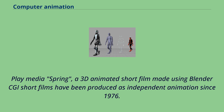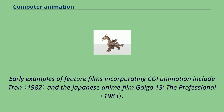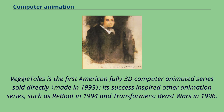A 3D animated short film made using Blender — CGI short films have been produced as independent animation since 1976. Early examples of feature films incorporating CGI animation include Tron and the Japanese anime film Golgo XIII: The Professional. Veggie Tales is the first American fully 3D computer animated series sold directly. Its success inspired other animation series, such as Reboot in 1994 and Transformers: Beast Wars in 1996.